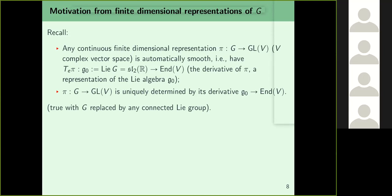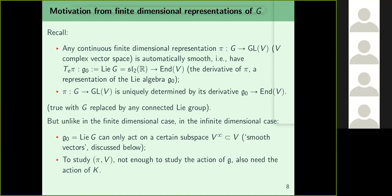For infinite-dimensional representations, a continuous representation need not be automatically smooth — only some vectors are smooth. Also, unlike the finite-dimensional case, studying the representation requires not just the Lie algebra action but also the action of K. This makes sense from the perspective of GL2(R), which is disconnected (determinant can be positive or negative), so the Lie algebra detects only the connected component.